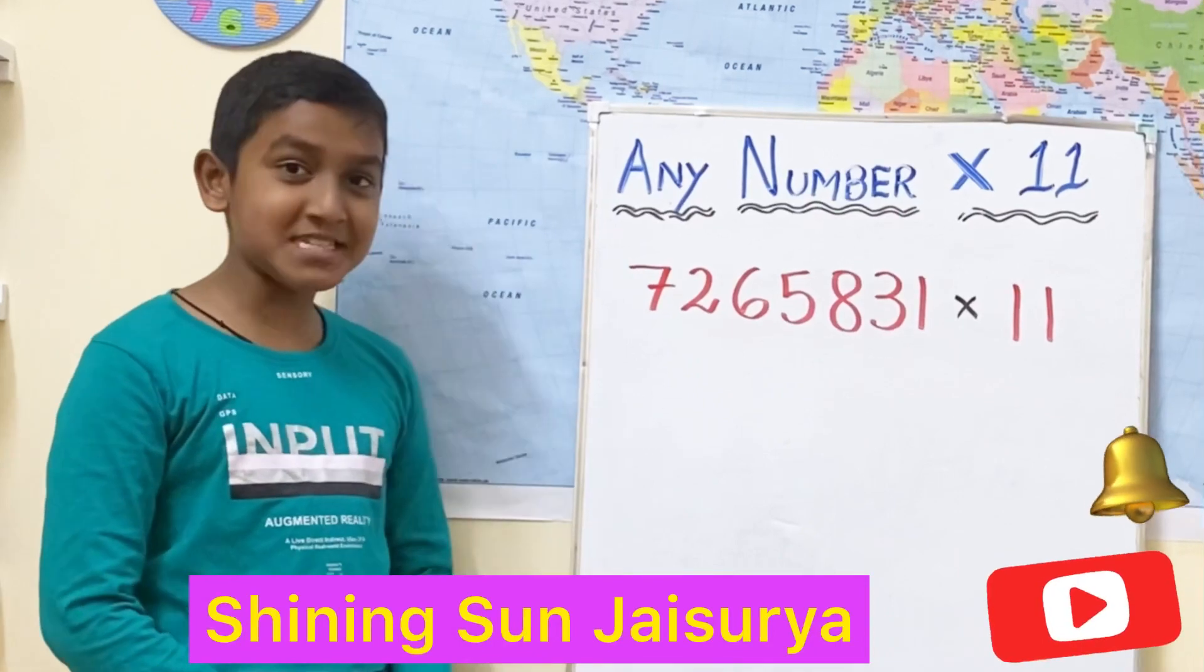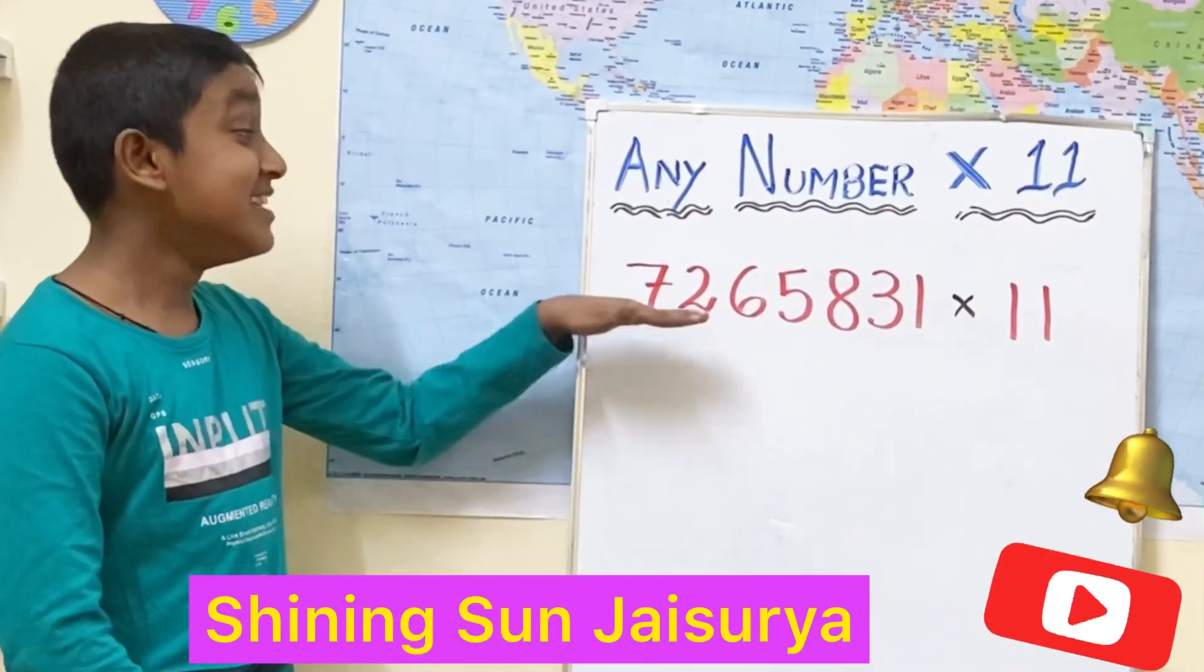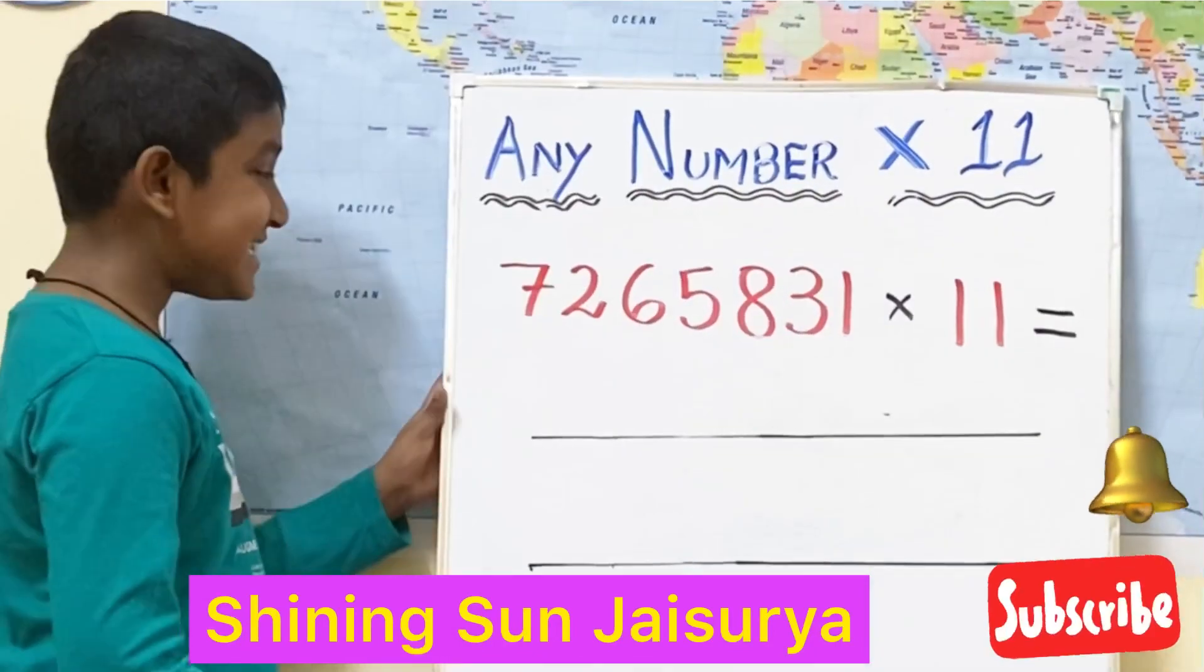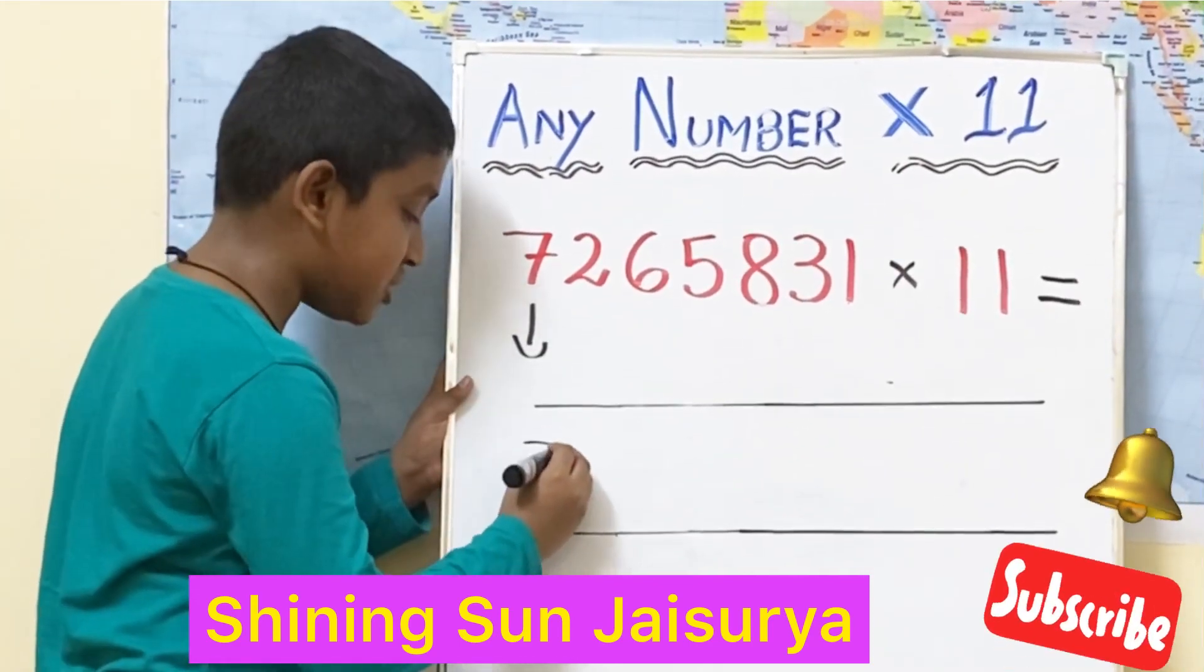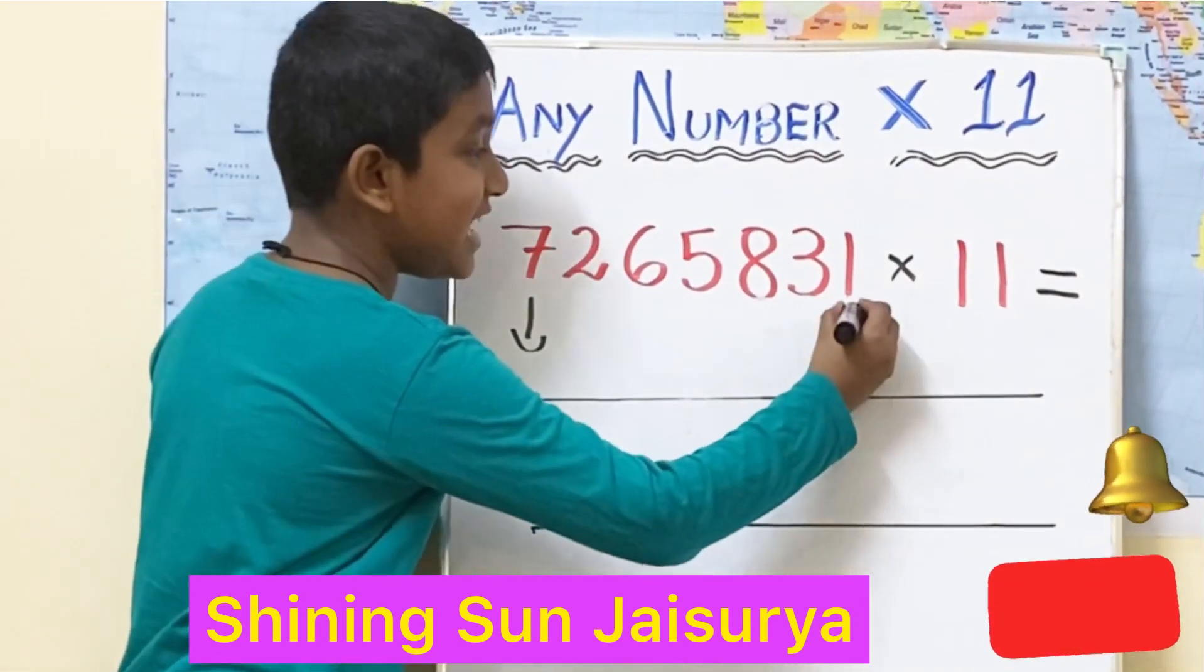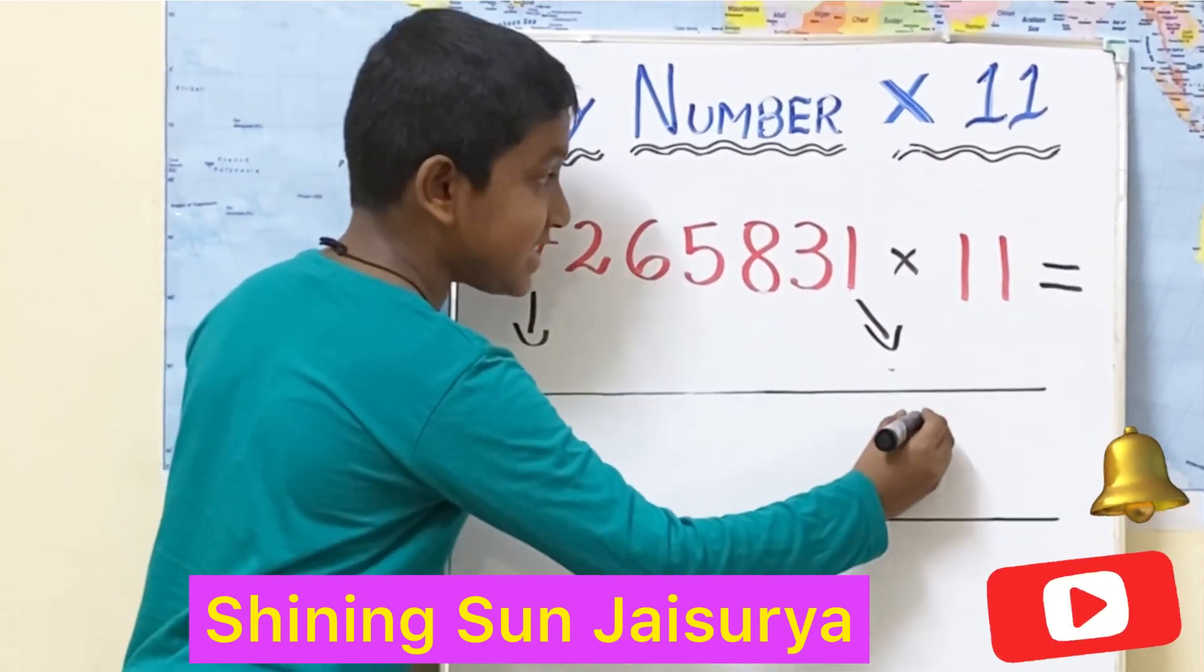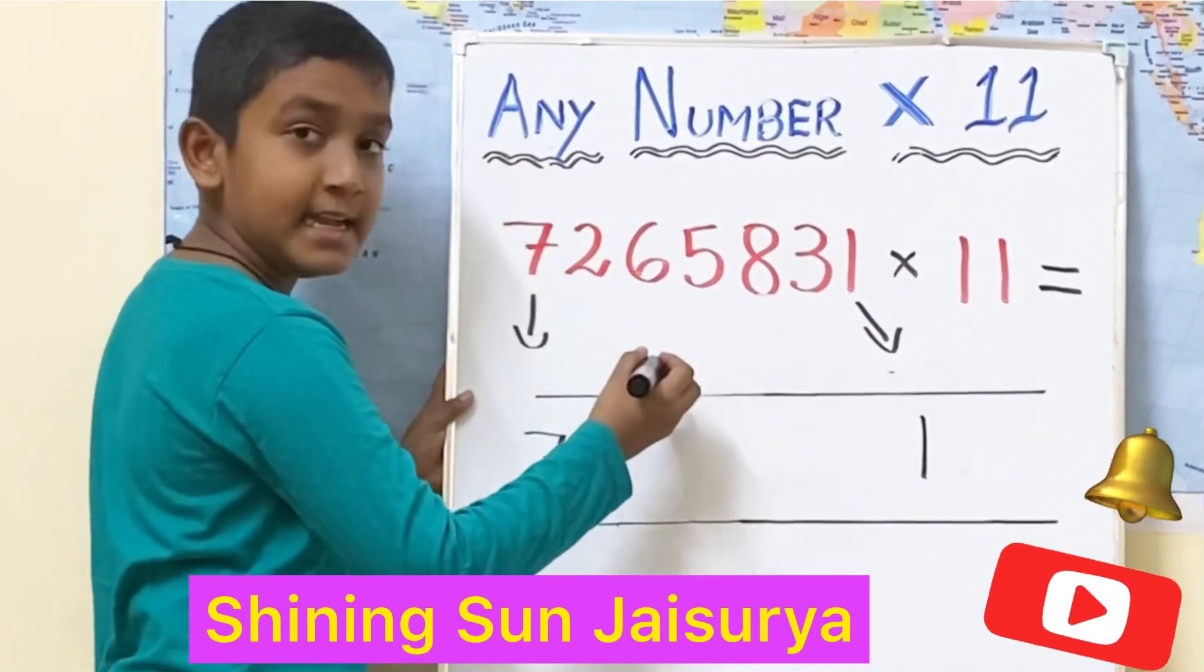Friends, by using the same super trick, now we are going to solve the 7-digit number. As I said earlier, question's first digit is the answer's first digit. Question's last digit is the answer's last digit. Now, let us add the numbers.